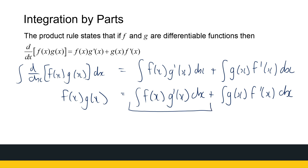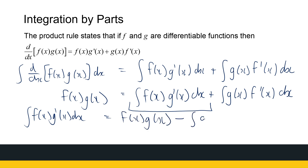The integral of f(x)·g'(x) dx is equal to f(x)·g(x) minus the integral of g(x)·f'(x) dx. And that is how integration by parts is going to work. We're going to look at integrals of this form and use this formula to actually integrate.